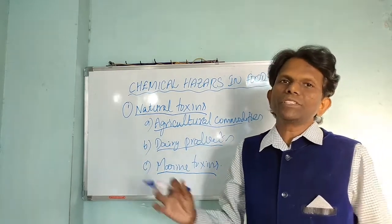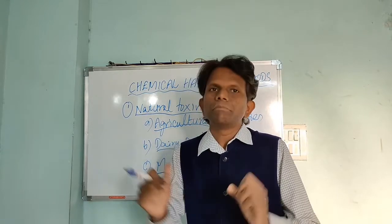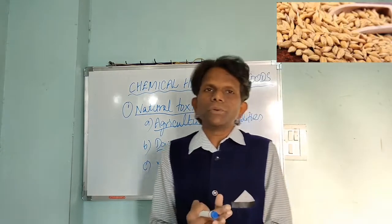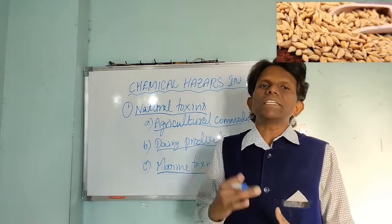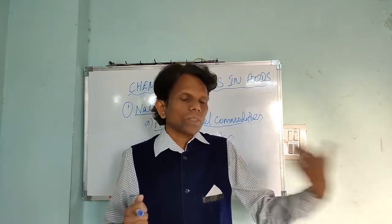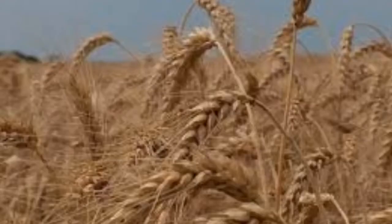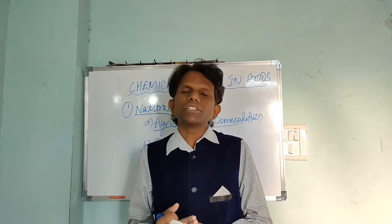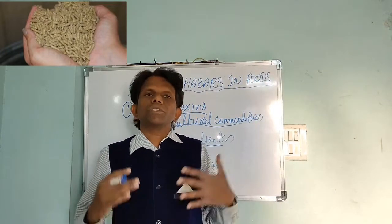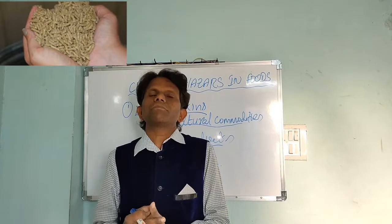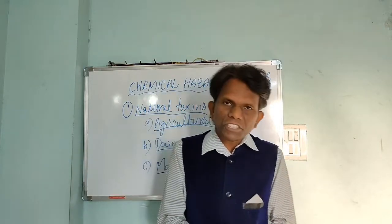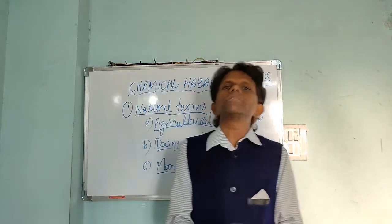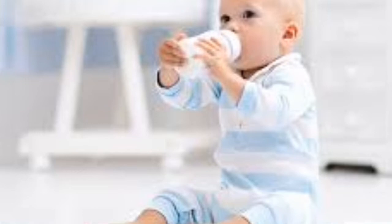The natural toxins present in Agricultural Commodities — the best example is Mycotoxins. Mycotoxins are produced by certain kinds of fungi when foods such as maize, corn, peanuts, wheat, barley, and some grains are harvested in wet conditions. During stress or drought conditions, or with improper drying or improper storage, there is extensive proliferation and growth of certain kinds of molds in the food.